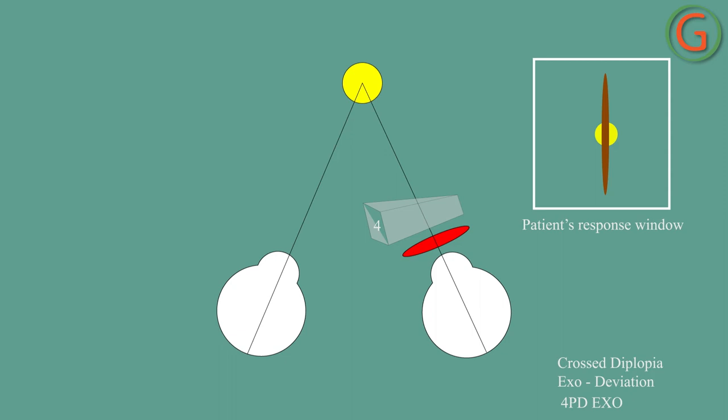When there is an uncrossed deviation or ESO deviation, the vertical light is seen to the right of the light source. The line is then moved with the base out prism until it is in the middle of the light. The amount of ESO deviation is shown by the power of the base out prisms used as a whole.